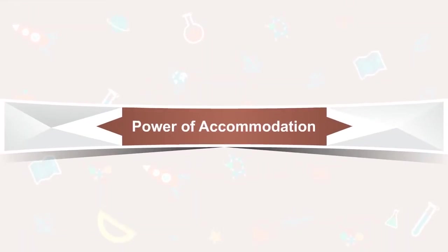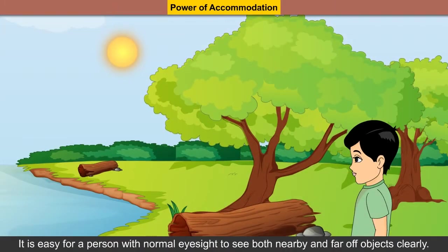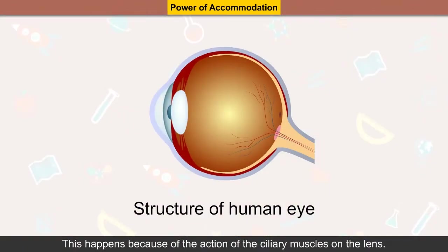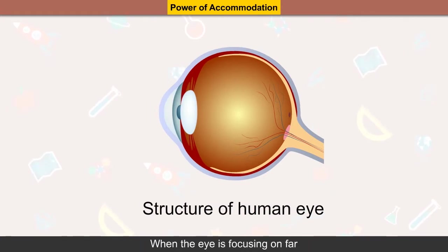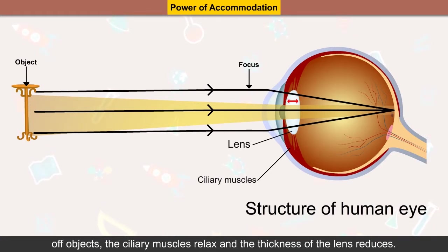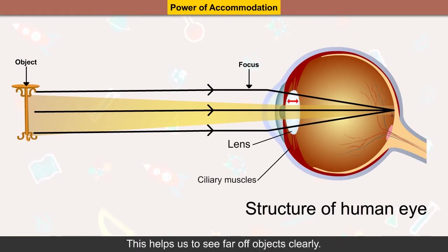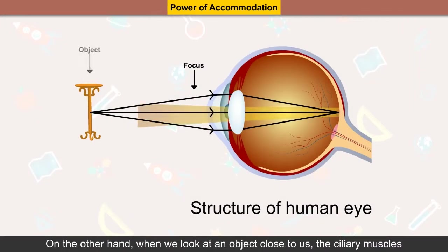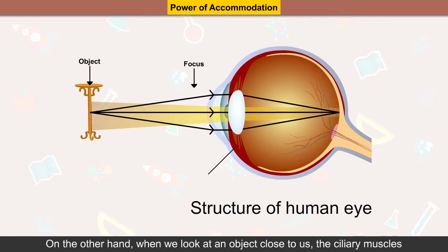Power of accommodation: a person with normal eyesight can see both nearby and far-off objects clearly. This happens because of the action of the ciliary muscles on the lens. When the eye is focusing on far-off objects, the ciliary muscles relax and the thickness of the lens reduces, helping us see far-off objects clearly.